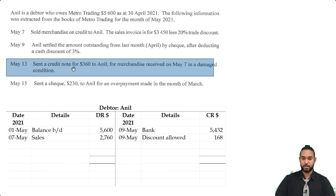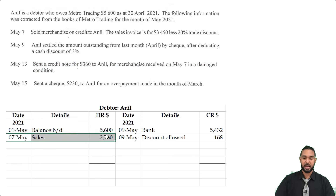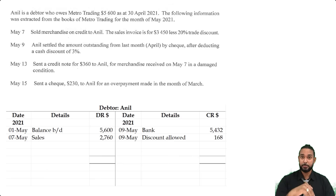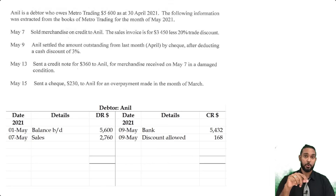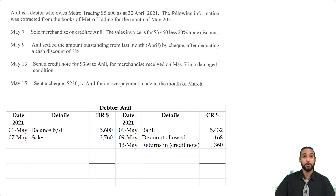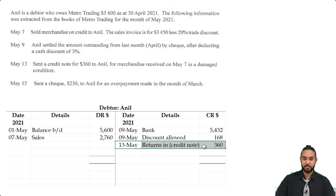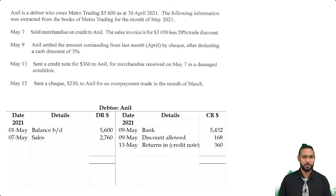On May 13th, we sent a credit note for 360 to Anil for merchandise received on May 7th in a damaged condition. On May 7th we sold goods to Anil on credit, but some of those goods were damaged — we can't charge someone for damaged goods. So we reduce the amount they owe us via a credit note, which is a document a seller sends to a customer saying we are crediting your account. On the credit side you'll see 'Returns Inwards / Credit Note: 360', because Anil will likely return those damaged goods.